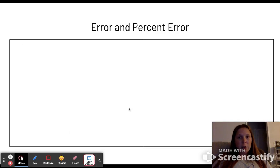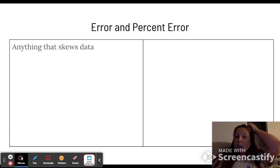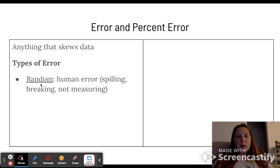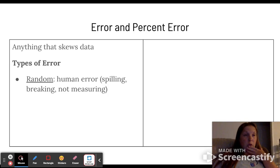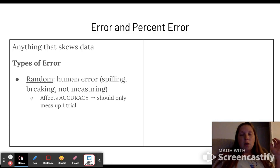All right. So now let's get into percent error and error itself. This is anything that could skew your data, anything that could mess it up or make your measurements go off. One type of error is random error, which is also known as human error. This is something that should not happen, but if it does, it's just coincidental. Spilling something, breaking something, not measuring something, forgetting to turn your hot plate on, things like that. This one affects your accuracy because it should only mess up one trial because you should see that that happened and then know to fix it for the next time.